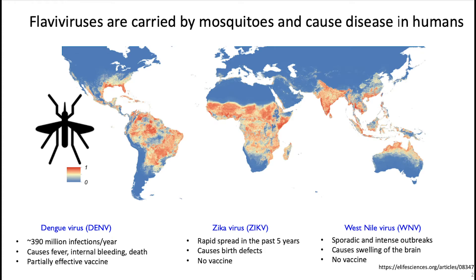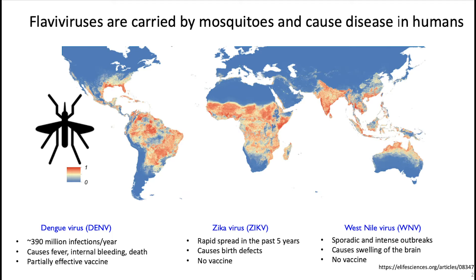We research flaviviruses, which are a large group of viruses transmitted to humans by mosquitoes and ticks. Some examples of flaviviruses transmitted by mosquitoes include dengue, Zika, and West Nile virus. The map depicts where Aedes aegypti and Aedes albopictus mosquitoes live, with their main habitat in red, and areas where these vector species don't live in blue.